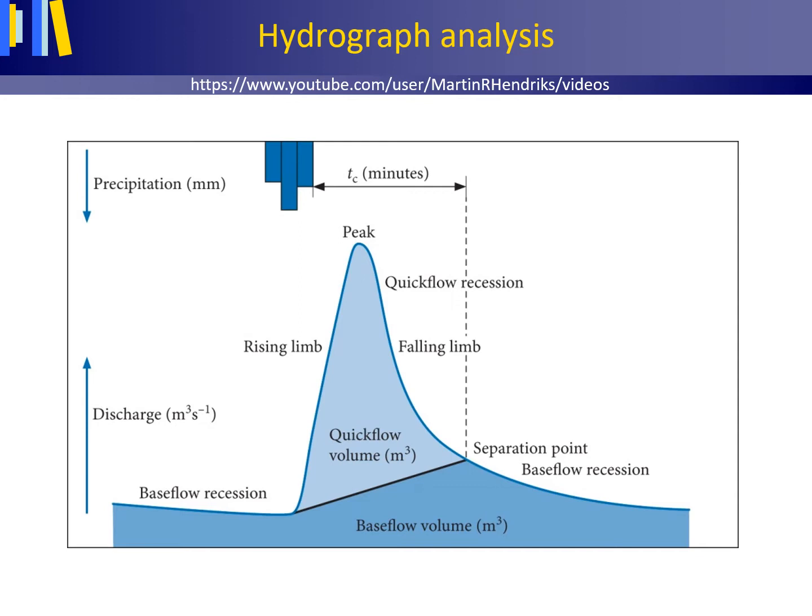The discharge or part of the discharge of a stream caused by processes delivering water rapidly to the stream is called quick flow. For the discharge volume that stems from these rapid processes, we use the term quick flow volume.